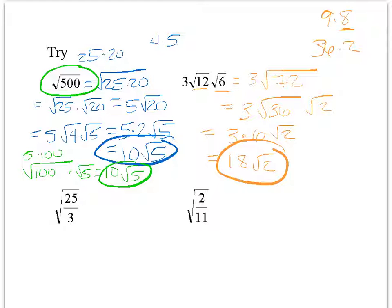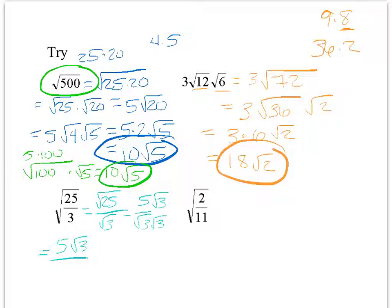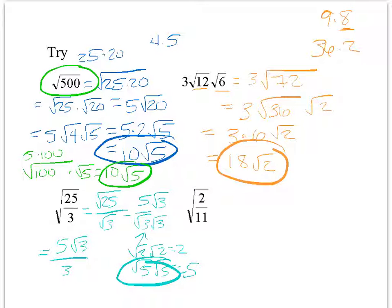Square root of 25/3 is a fraction in the square root—break rule 3—so split it: square root of 25 over square root of 3, which is 5 over square root of 3. Now rule 2 is broken, so rationalize: multiply top and bottom by square root of 3. Top becomes 5 square roots of 3. Bottom: square root of 3 times square root of 3 equals 3. Final answer: 5 square roots of 3 over 3.